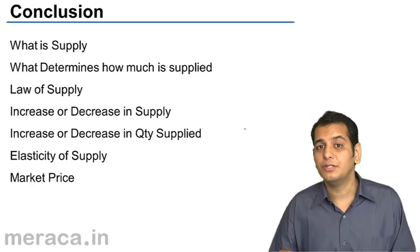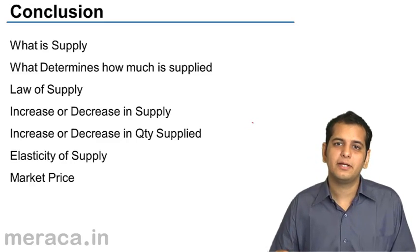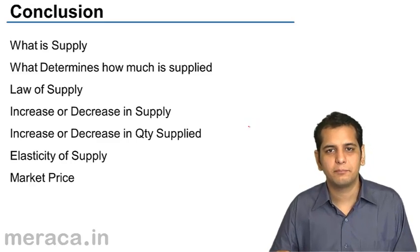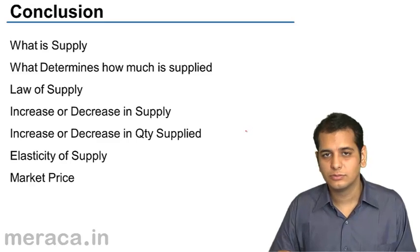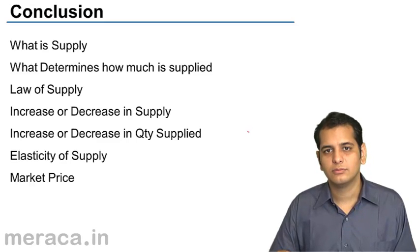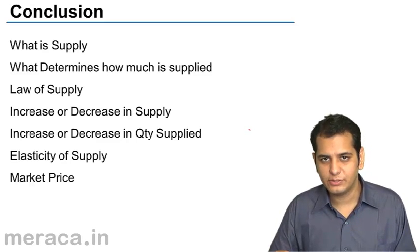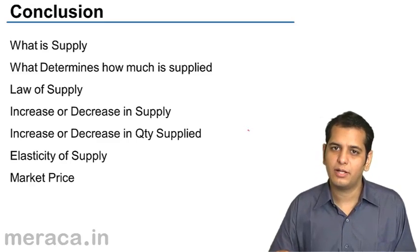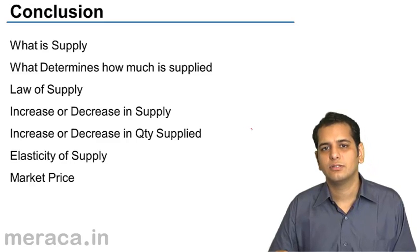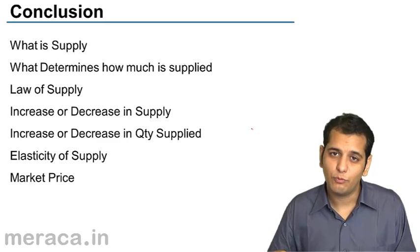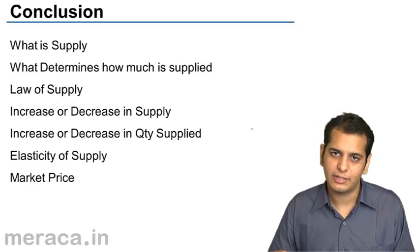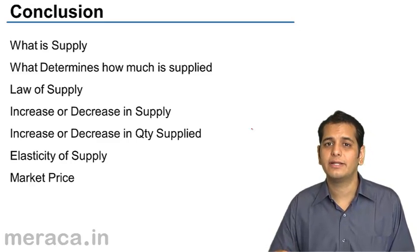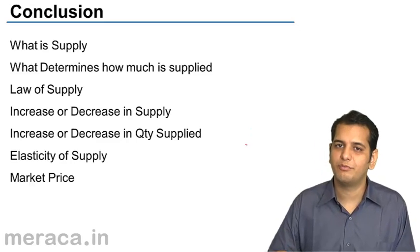Then we've done the law of supply. The law of supply states, ceteris paribus, when the price rises, the supply of goods also rises; when the price falls, the supply of goods also falls. That is, there is a direct relation between the two.